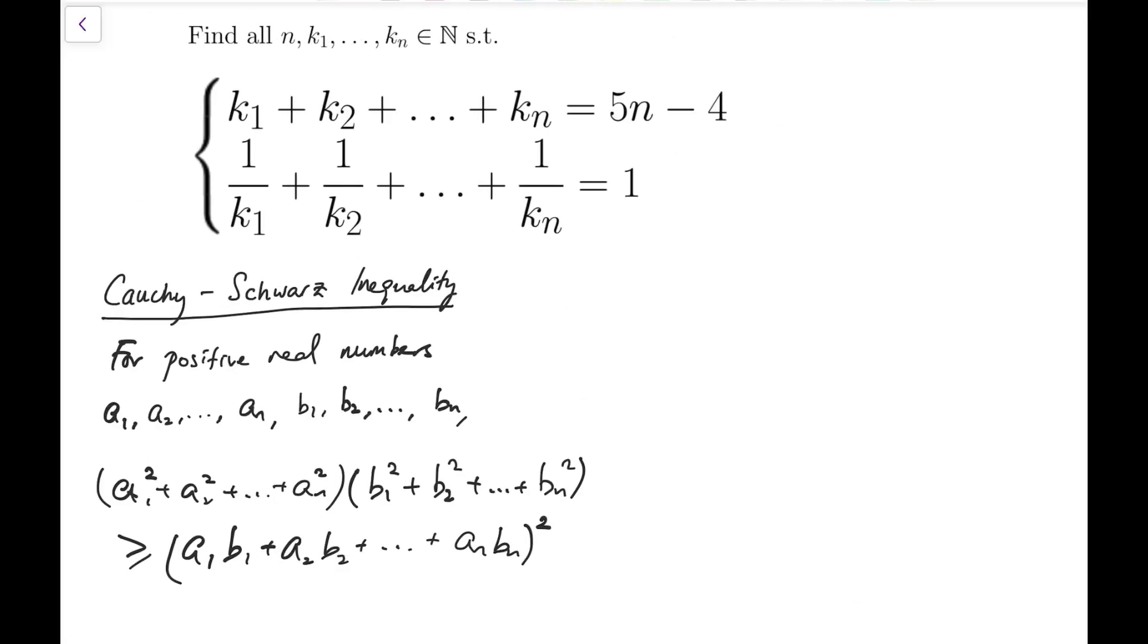The system that contains these two equations might look very complicated because we are now actually having n plus 1 variables, and even the number of variables is also an unknown. But we can actually help degenerate the problem very quickly with the help of this tool, which is the Cauchy-Schwarz inequality.